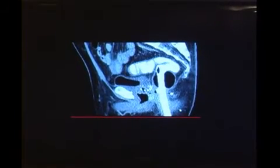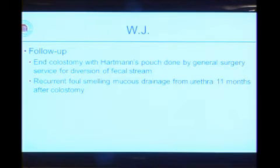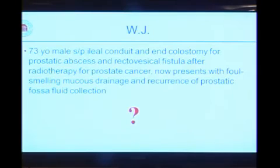He started passing brown material — from a rectovesical fistula. This was after the ileal conduit had been placed. Imaging showed contrast tracking into that capacious prostatic urethral area. General surgery colleagues performed an end colostomy with Hartmann's pouch, and he did well with that for nearly a year. But then he again began having recurrent foul-smelling drainage from his urethra — probably from the blind end of the Hartmann's pouch accumulating mucus — and he was still draining per urethra.